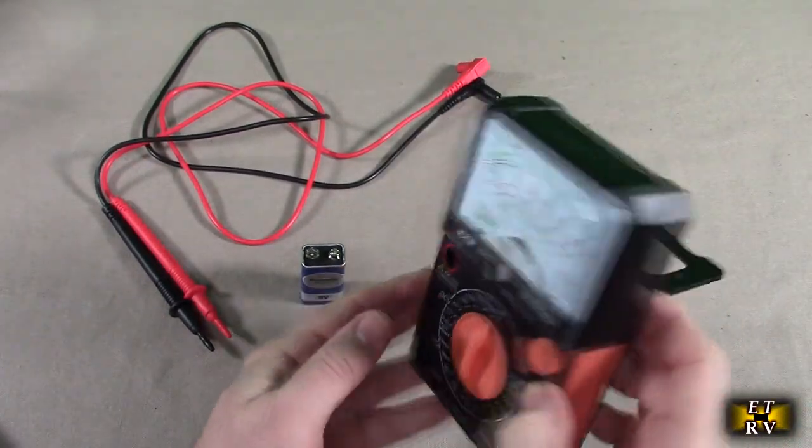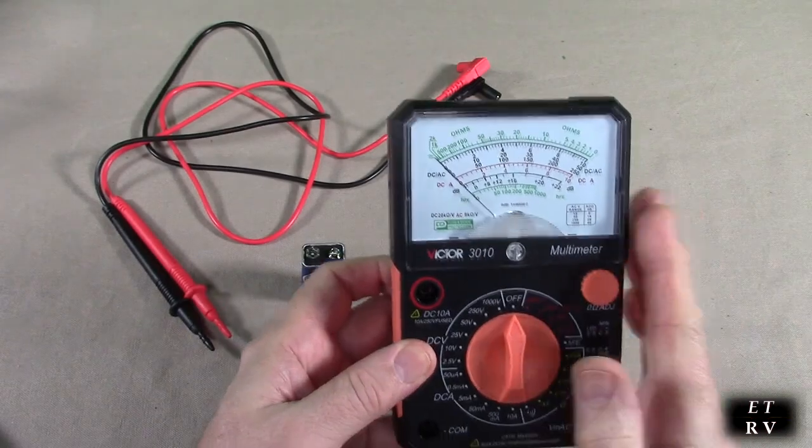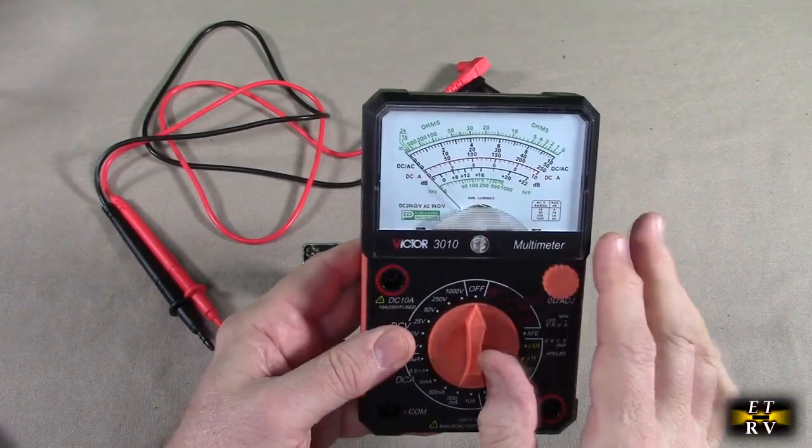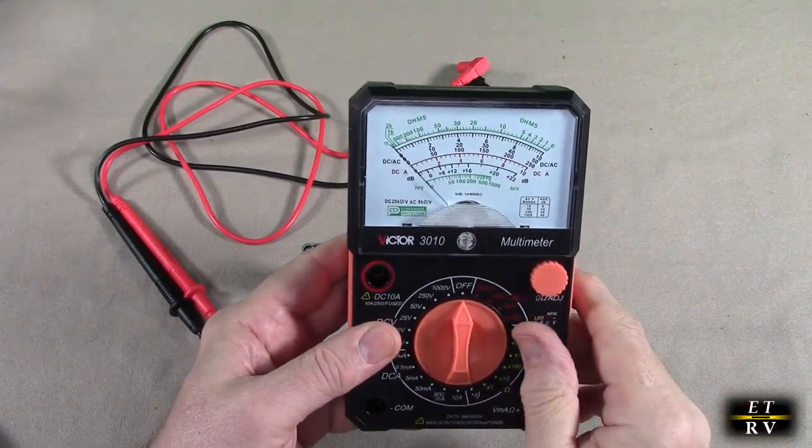Now what's nice about this, it has a stand built in. This is oversized which is nice. Most of these are smaller. The advantage is that you have a large scale so you get more accuracy.